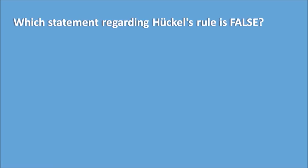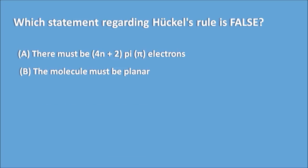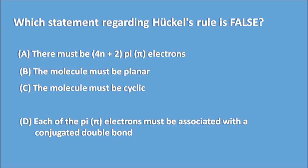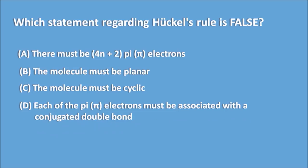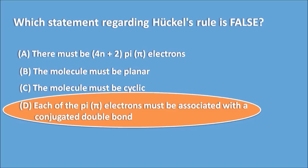Which statement regarding Hückel's rule is false? Option A: there must be 4n+2 pi electrons. Option B: the molecule must be planar. Option C: the molecule must be cyclic. Option D: each of the pi electrons must be associated with a conjugated double bond. The false statement is Option D, so D is the answer for this question.